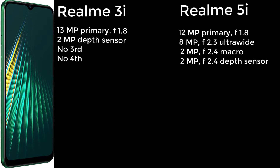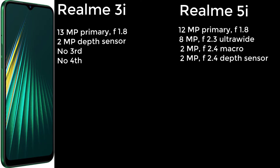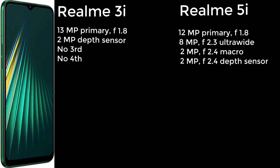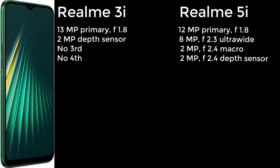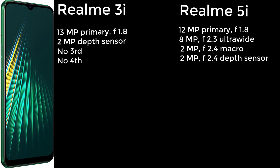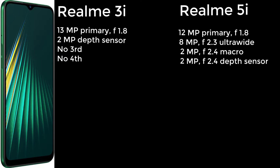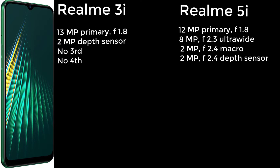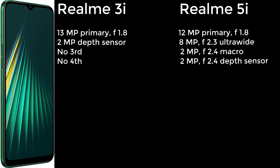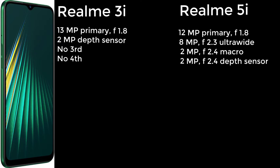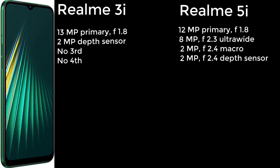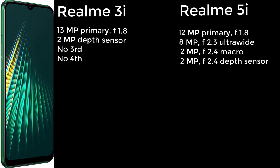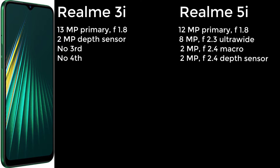The Realme 5i has a 12-megapixel main camera with f/1.8 aperture, an 8-megapixel f/2.3 ultra-wide secondary camera, a 2-megapixel f/2.4 dedicated macro camera, and a fourth 2-megapixel f/2.4 depth sensor.